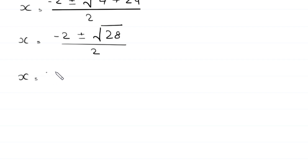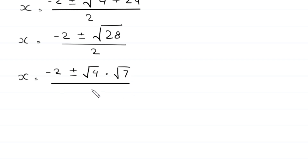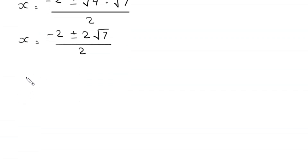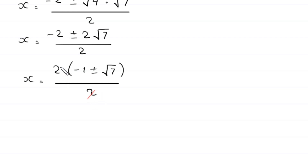Next, the square root of 28 can be written as square root of 4 times square root of 7, so x equals negative 2 plus or minus 2 times square root of 7, divided by 2. Factoring out 2 from the numerator gives 2 times negative 1 plus or minus square root of 7, divided by 2. The 2s cancel, and we get two values: x₁ equals negative 1 plus square root of 7, and x₂ equals negative 1 minus square root of 7.